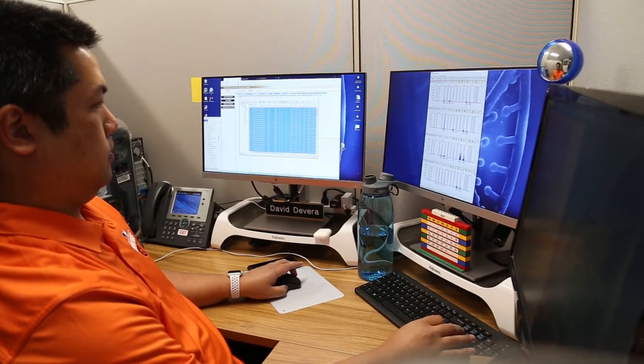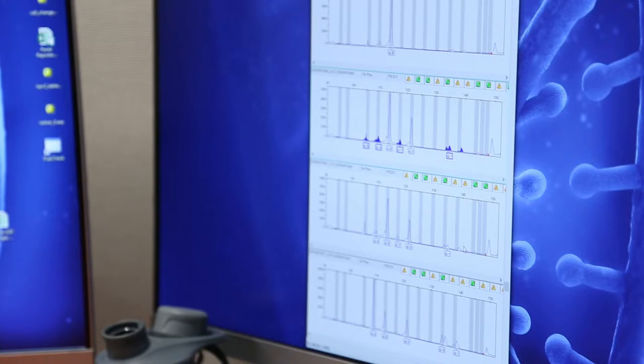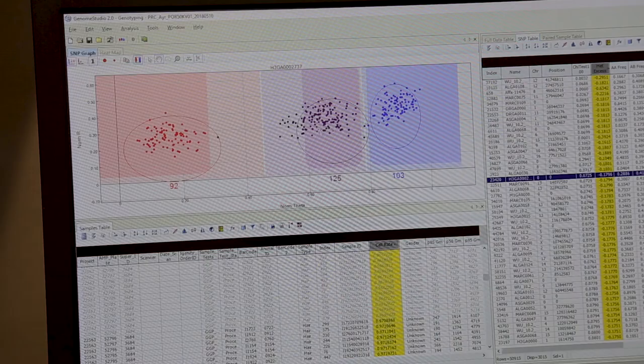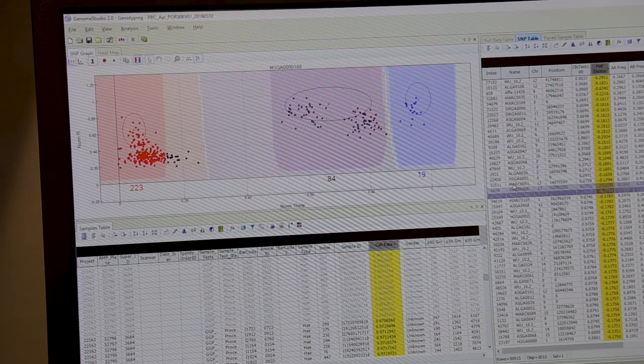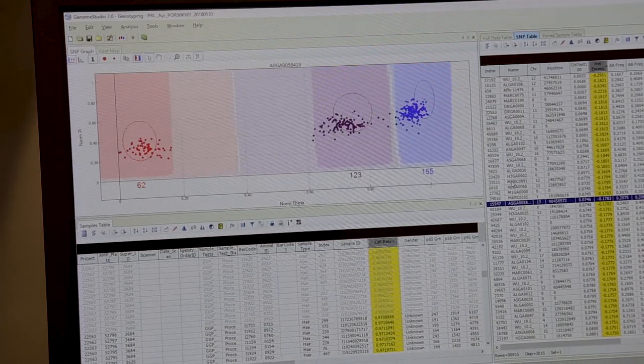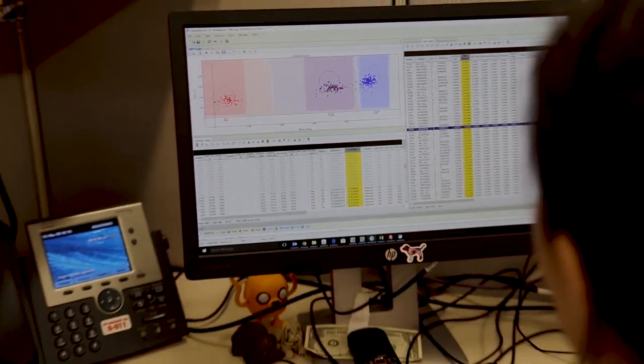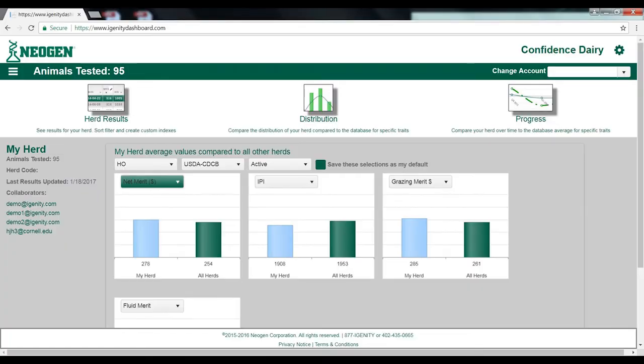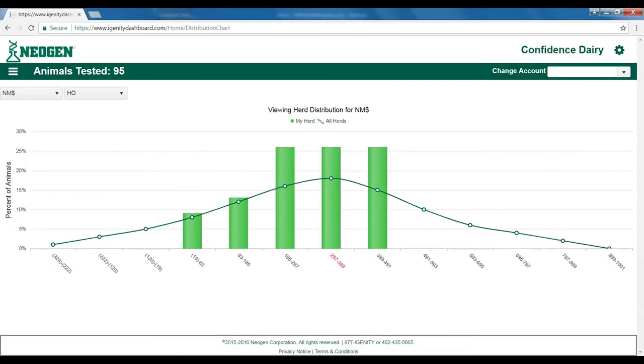Our final stage involves analyzing the data generated from the DNA instruments. We carefully examine the results from the various scanners and employ complex math formulas to interpret the raw DNA. After careful analysis and quality control, we report the data to our customers.